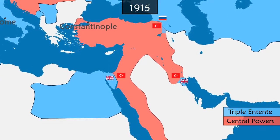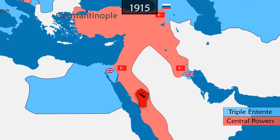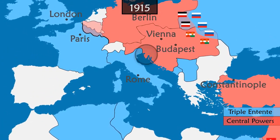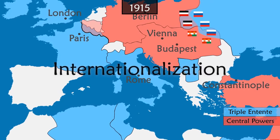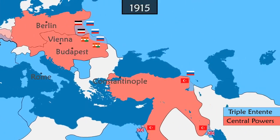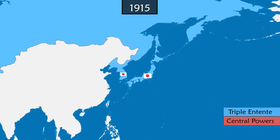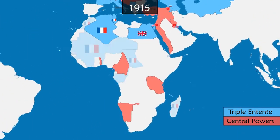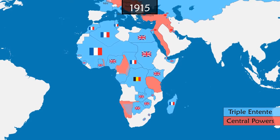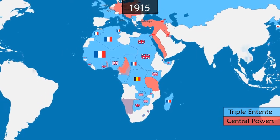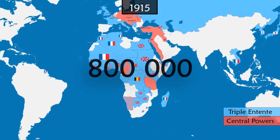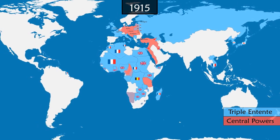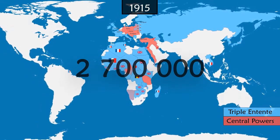To weaken the Ottoman Empire, Britain supports an Arab rebellion by promising them independence in liberated lands. Italy declares war on Austria-Hungary with the hope of gaining new territory. In Asia, Japan went to war against Germany and seized its colonies in the Pacific and China. In Africa, German colonies are stormed by French, British and Belgian forces. Many people from colonised territories are enlisted in European armies. France mobilises nearly 800,000 people, a large proportion of whom are sent to Europe. The British Empire enlists 2.7 million men from its dominions and colonies.